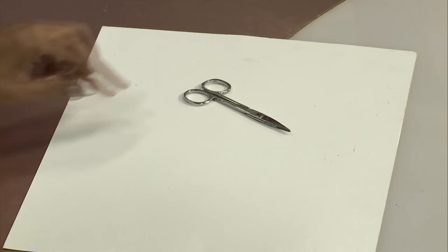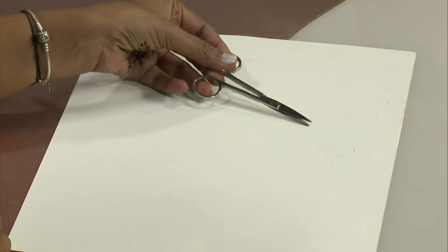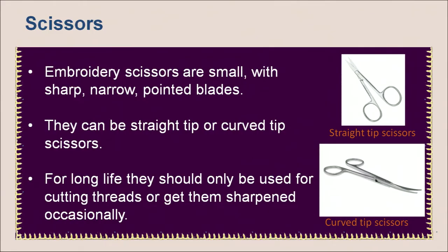The thimble is worn for protection on the finger that pushes the needle in sewing. Traditionally, as embroidery work was a major activity, the thimble was very much used. However, nowadays, due to comparatively lesser engagement of people in embroidery at home, the thimble is not very popular. Scissors are an important tool that we all must possess while doing embroidery. Embroidery scissors are small with sharp, narrow pointed blades. There are two types of scissors used for embroidery. For long life, they should only be used for cutting threads, or we should get them sharpened occasionally.